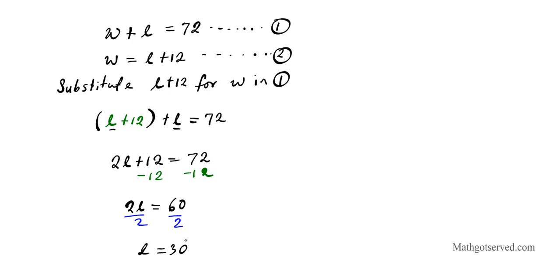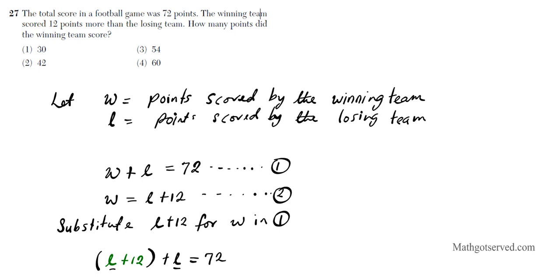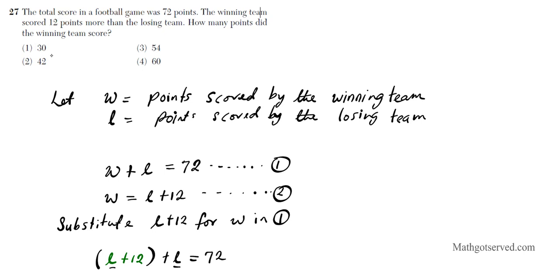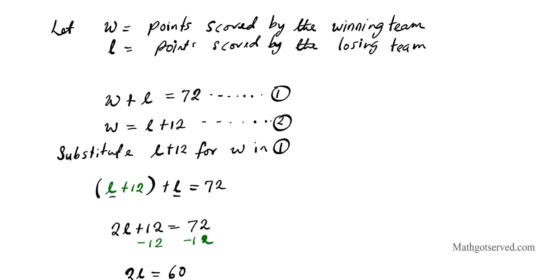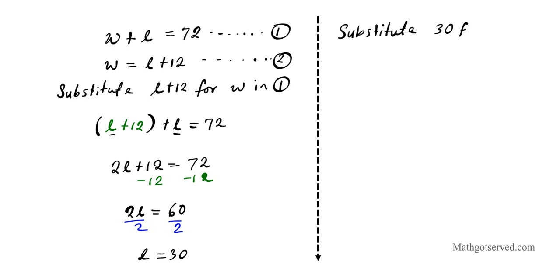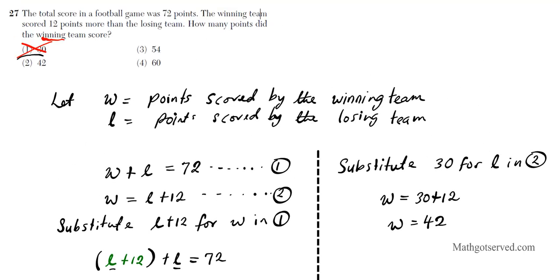Is L equals 30 our answer? 30 is a trap — that's the points scored by the losing team, but the question asks for the winning team. We need to find w, so we substitute 30 for L in equation 2: w equals 30 plus 12 equals 42. The winning team scored 42 points, so the answer is option number 2.